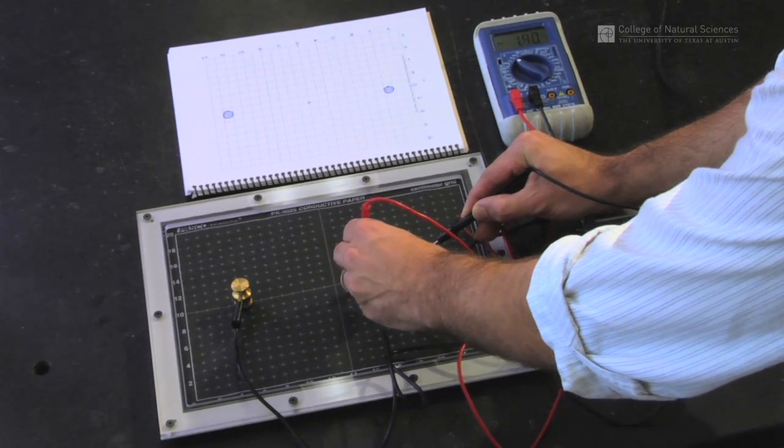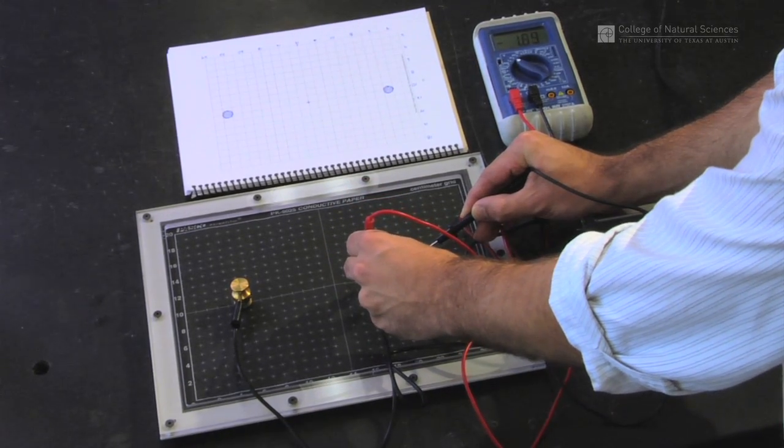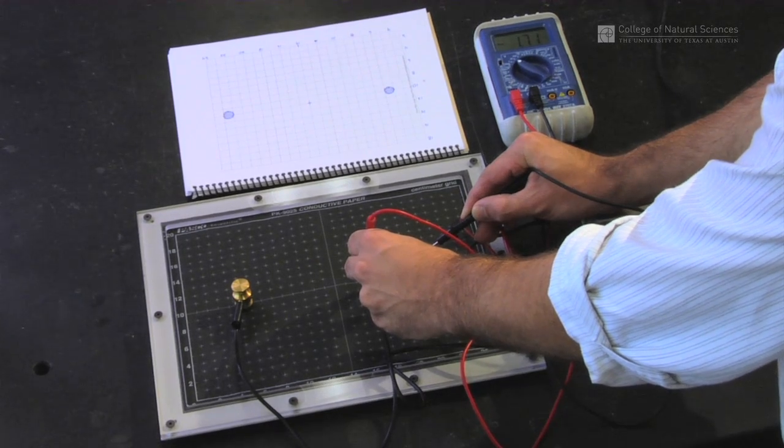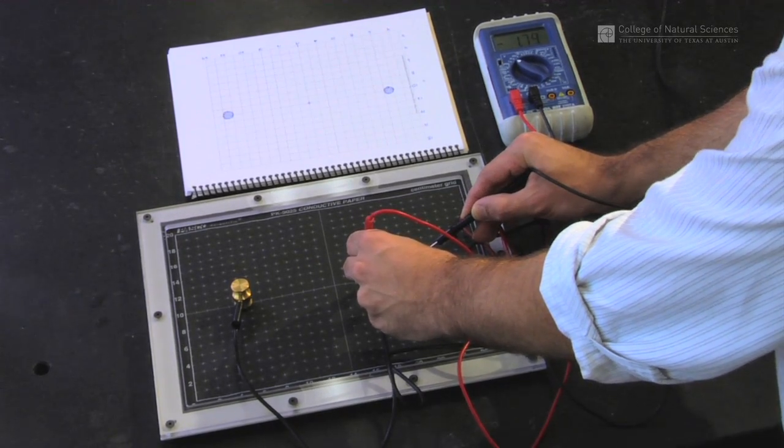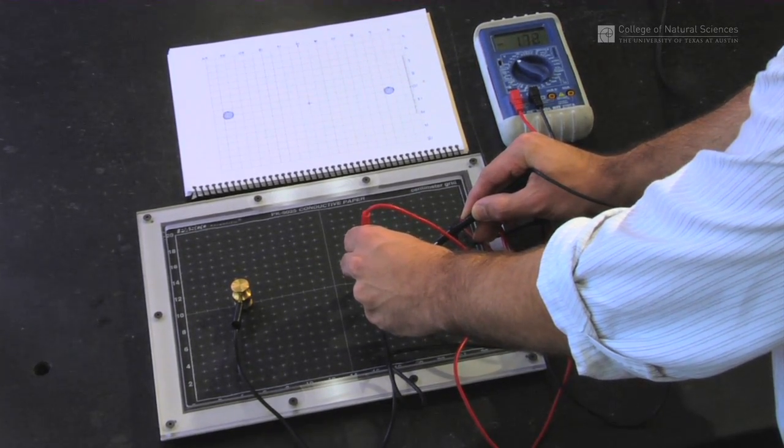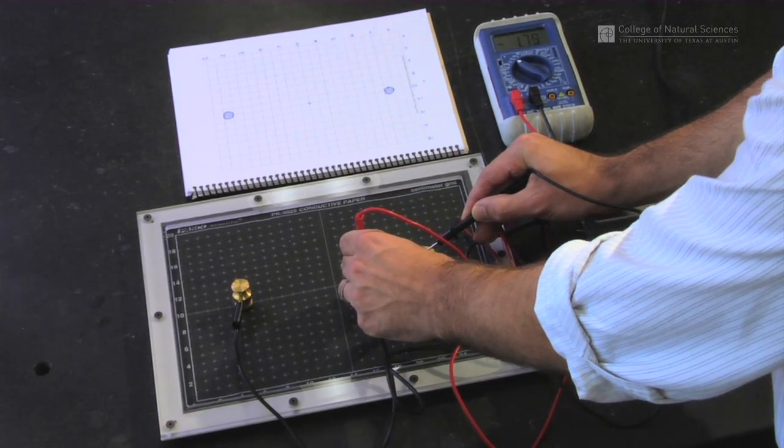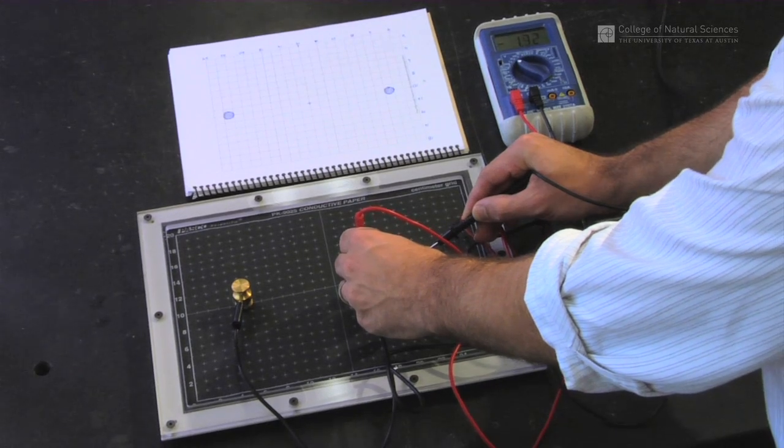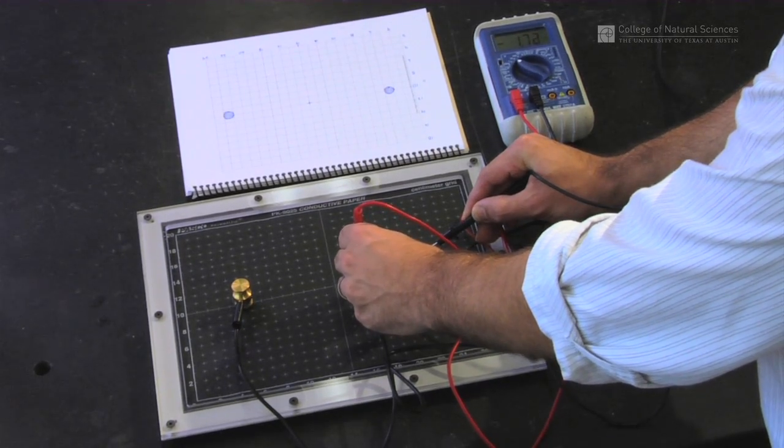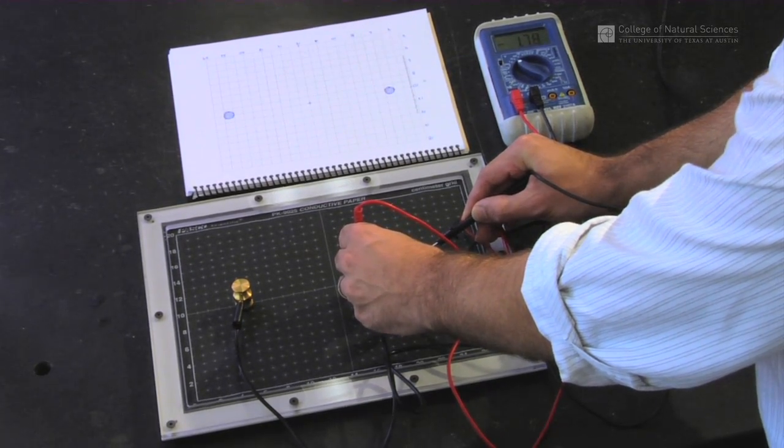We take one probe and place it somewhere between the two supply source wires. We read right now that it has a certain voltage on the multimeter. Right now I'm reading that it's 1.73 volts.